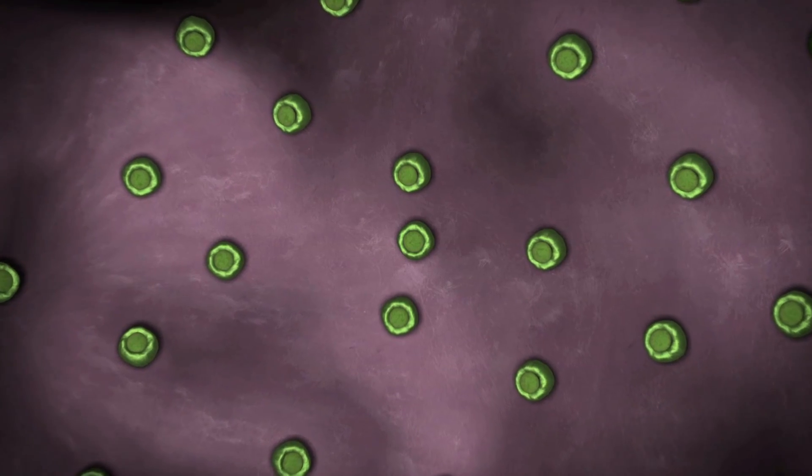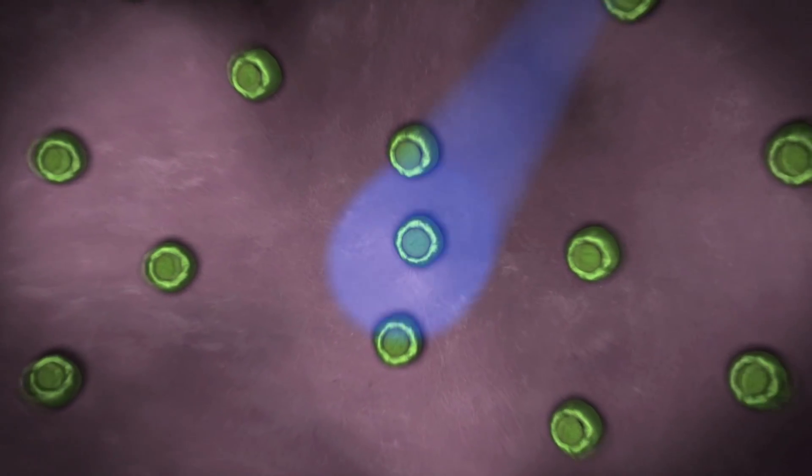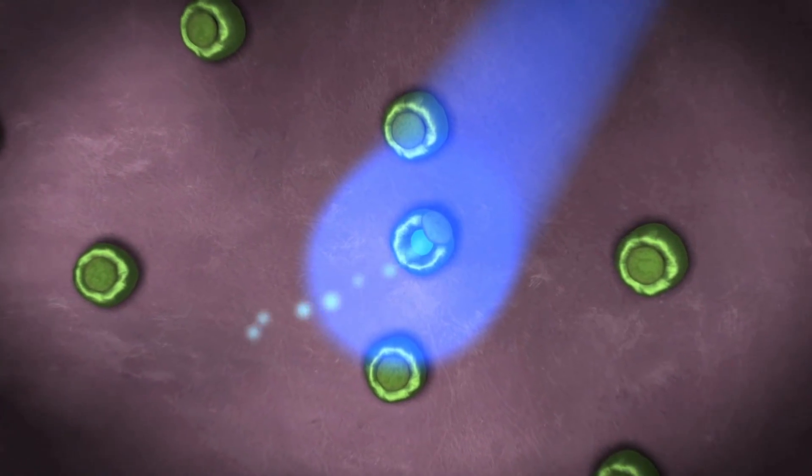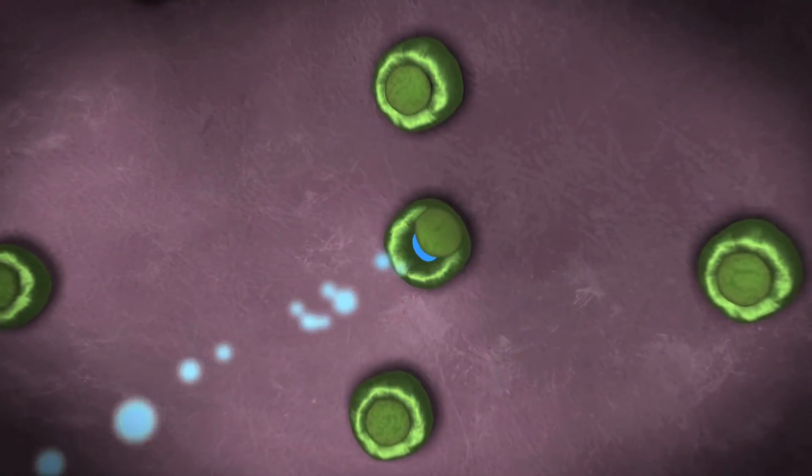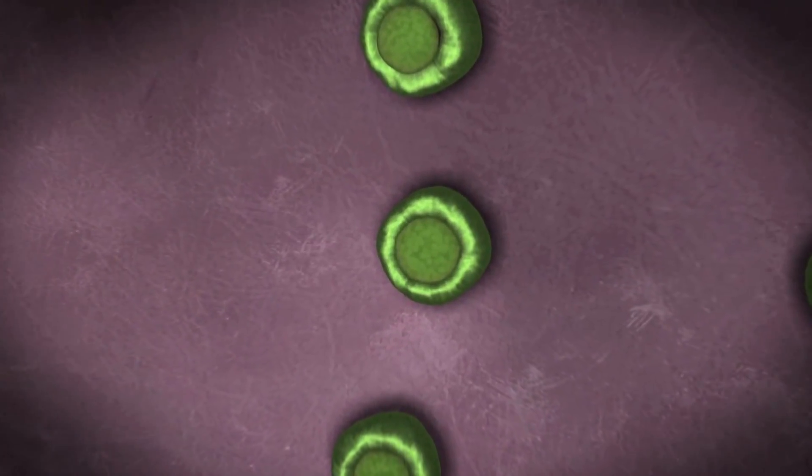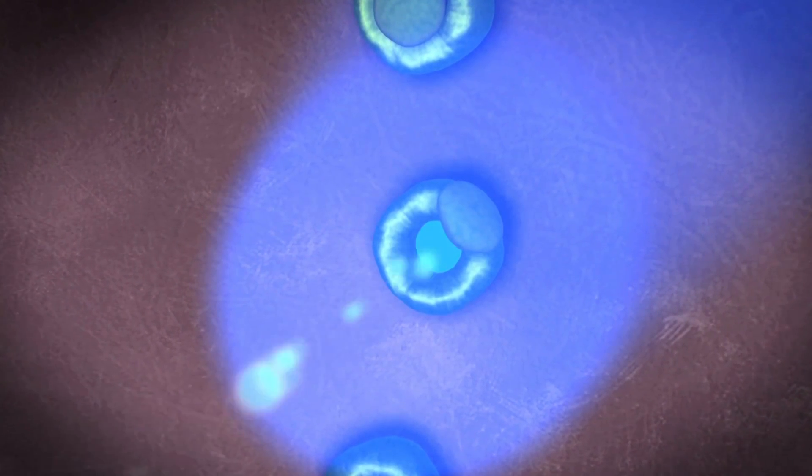The eye spot contains a light-sensitive protein called channelrhodopsin, which responds to blue light by moving positively charged ions across the eye spot membrane, causing the voltage of the eye spot to change, a bit like a battery being charged by a solar cell.